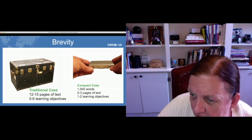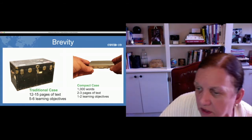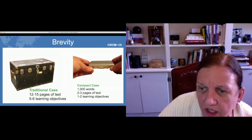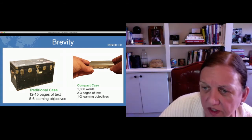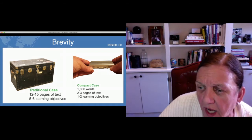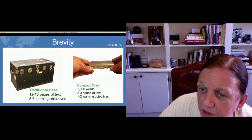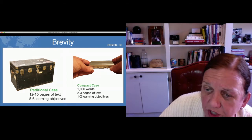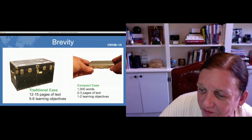One person notes that the last short cases special edition of CRJ were four pages plus two exhibits. At the Case Journal, we don't count the exhibits as part of the word count. So you can have 1,000 words but also have 10 exhibits if you can justify all of them.